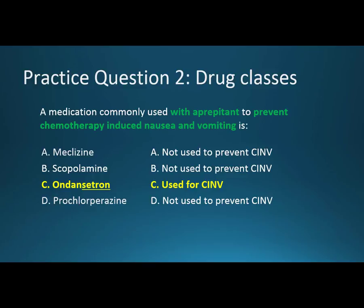Ondanzetron is given with highly emetogenic or moderately emetogenic chemotherapy agents to prevent nausea during and after the chemotherapy infusion. Depending on the risk of the chemotherapy agent causing nausea and vomiting, or if it can cause late-onset nausea and vomiting, can dictate our therapy. The three drugs we can add to prevent chemo-induced or delayed chemo-induced nausea and vomiting are a 5-HT3 receptor antagonist like ondanzetron, aprepitant, or a steroid like dexamethasone.